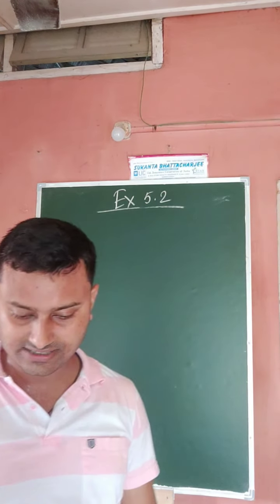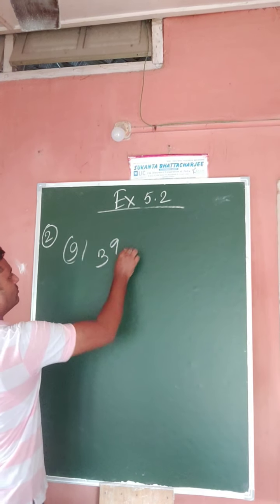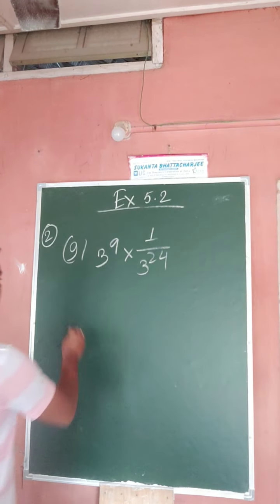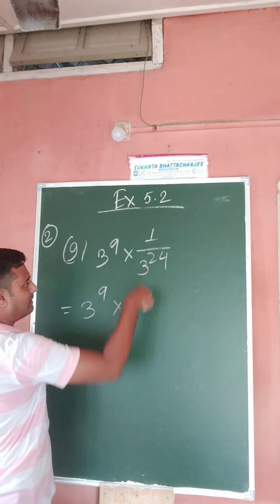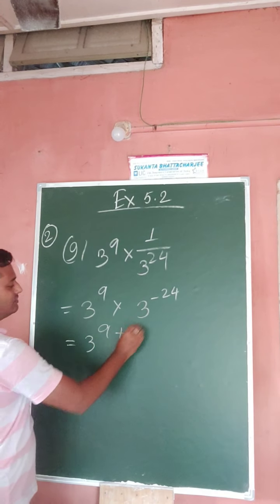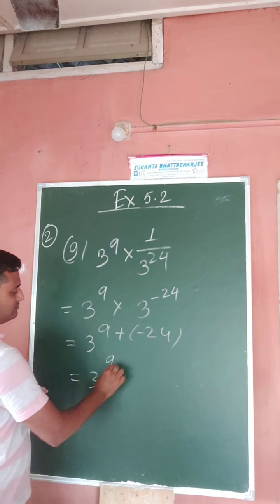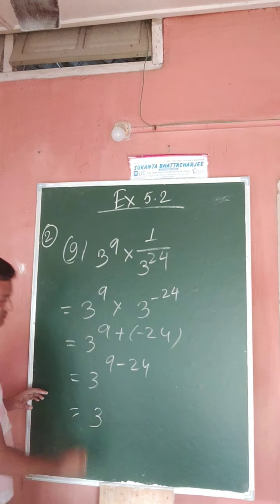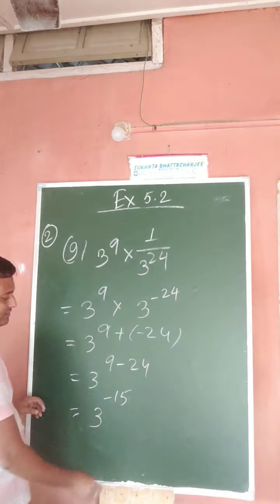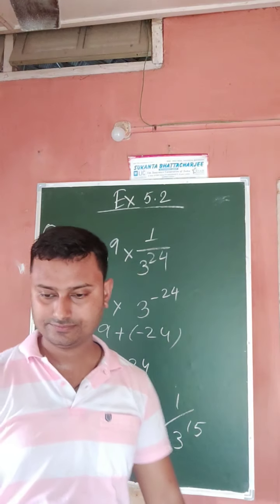Now come to question number z: 3 to the power 9 into 3 to the power 9 into 1 by 3 to the power 24. Simple: 1 by a to the power n means a to the power minus n. Applying the formula a to the power m into a to the power n equals a to the power m plus n: 9 plus 9 minus 24 gives minus 6. So the answer is 1 by 3 to the power 6. Thank you.